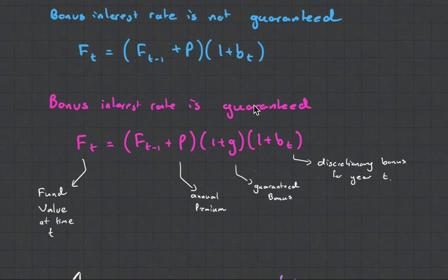When a bonus interest rate is guaranteed, we're going to have another separate little bracket - this is one plus g, and that's the guaranteed bonus.